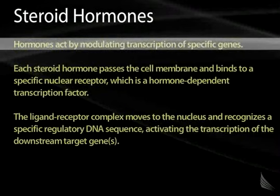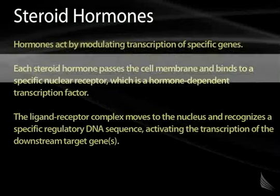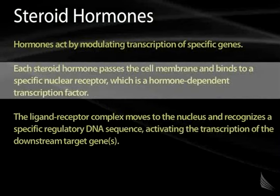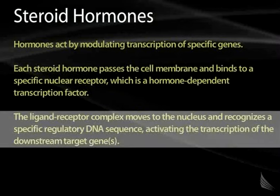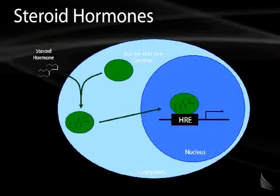Steroid hormones act by modulating transcription of specific genes. Each steroid hormone is able to pass through the cell membrane because it is hydrophobic, and it binds to a specific nuclear receptor, which is a hormone-dependent transcription factor. The ligand-receptor complex moves to the nucleus and recognizes a specific regulatory DNA sequence, activating or inhibiting transcription of downstream target genes. The nuclear hormone receptor sits in the cytoplasm, the steroid hormone passes through the plasma membrane, they bind, translocate to the nucleus, and sit on a promoter or enhancer element.